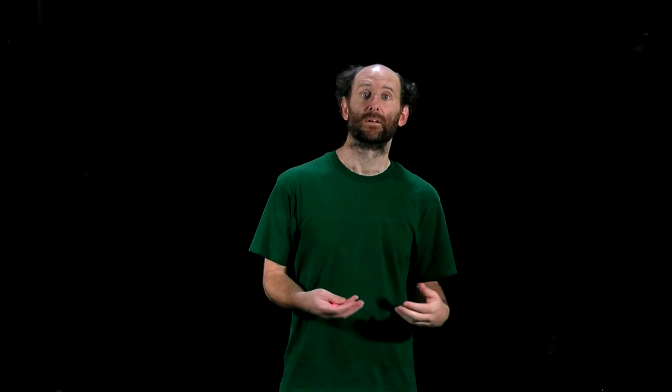Digraphs are often used to display precedence or dependence relationships. Let's consider a toy example. Suppose nodes are items of clothing and an arc from item U to item V means you need to put on item U before you can put on item V. Then you might have part of a dressing graph that looks like this.